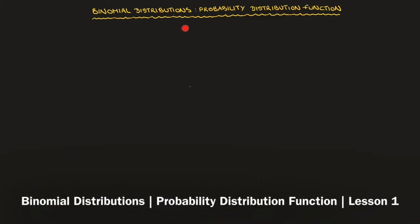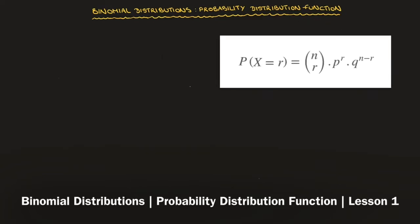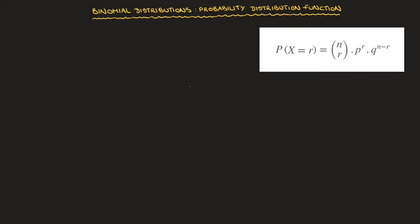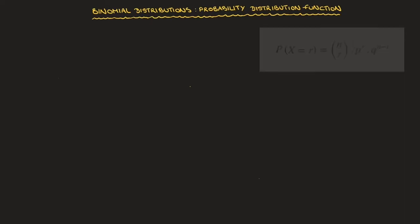We now learn about binomial distributions, in particular we learn about the probability distribution function, also known as PDF, for the binomial distribution. In just a minute we're going to be using the formula that we see on the right hand side here, but before doing so it's worth spending a minute or two to discuss the typical scenario in which we'll actually have to use it.